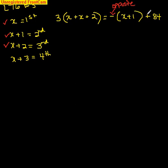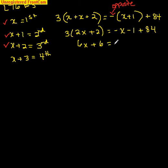So now, once you get it set up correctly, I think you're probably fine, but we'll keep going. This is three times 2x plus 2 equals minus x minus 1, distribute that, plus 84.